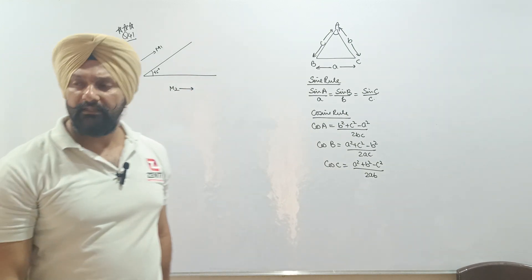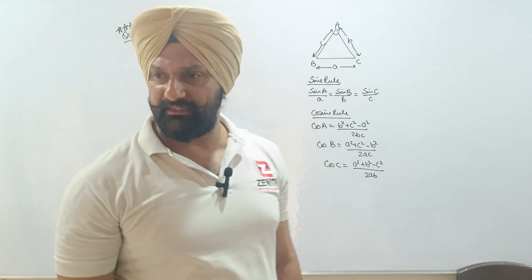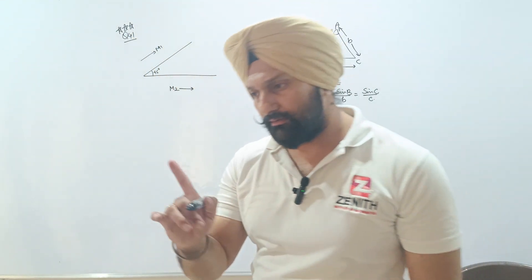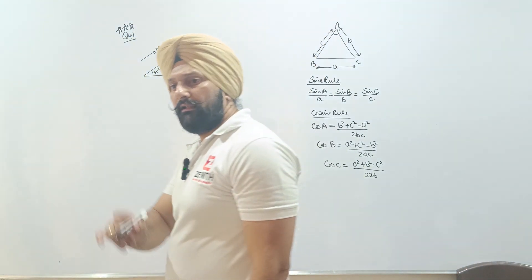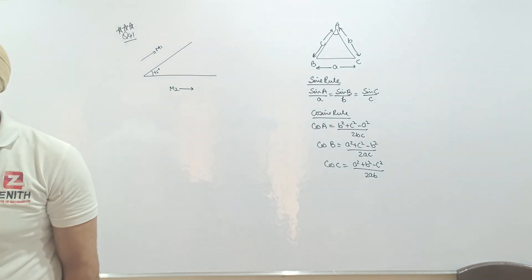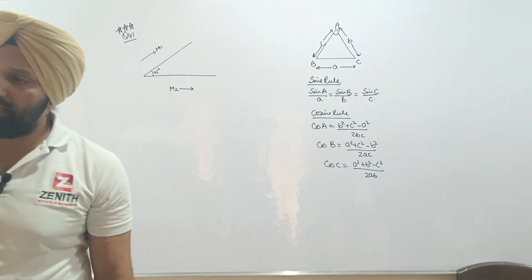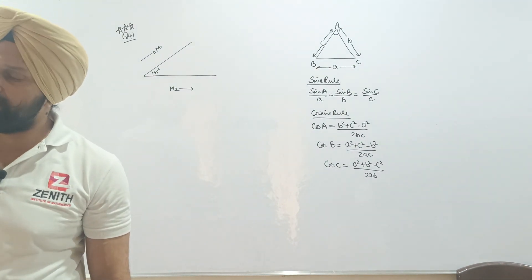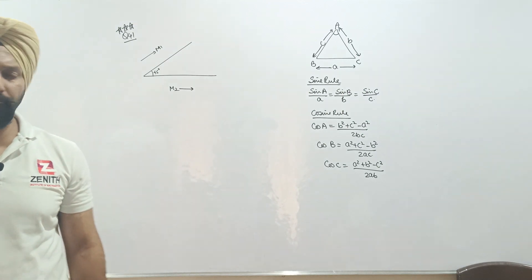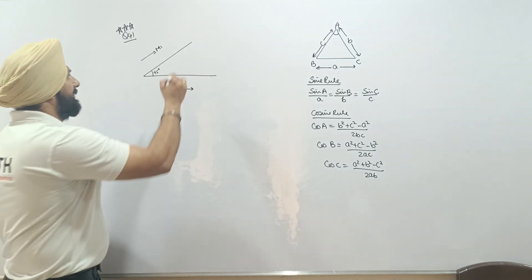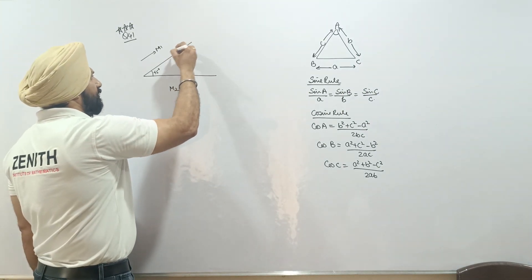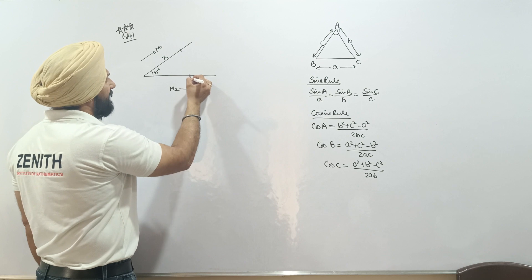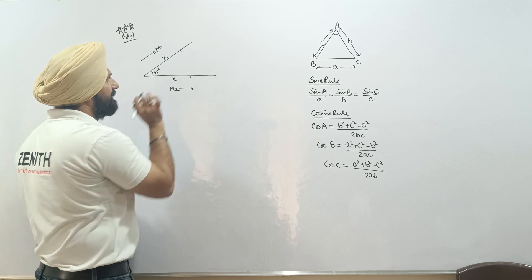Both persons travel with the same velocities. At a particular instant they have covered the same distance x along their respective roads.